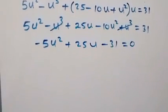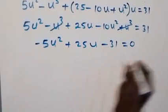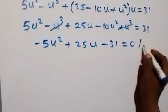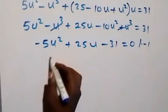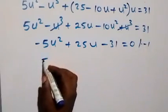From here, we can multiply through by minus 1 and solve for u using the quadratic formula, where a equals 5, b equals minus 25, and c equals 31.